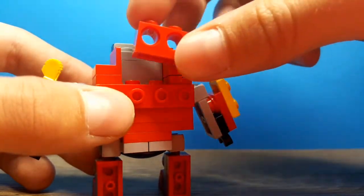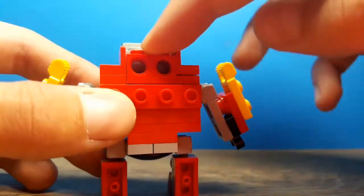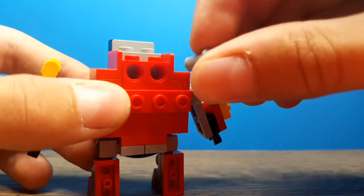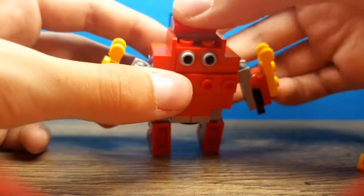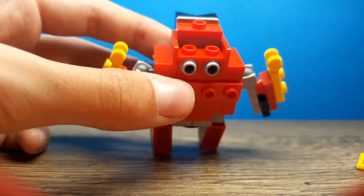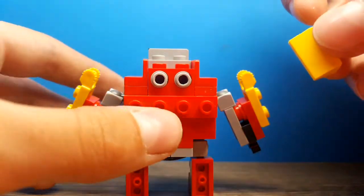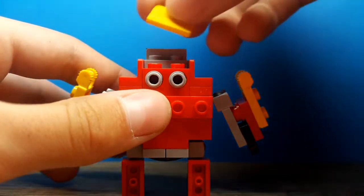On the back add this 1x2 brick which has 2 hollow spaces. Add 2 of these pins in these hollow spaces. On the top add a 1x2 plate or a jumper plate. Add a 1x2 yellow cheese slope at the top.